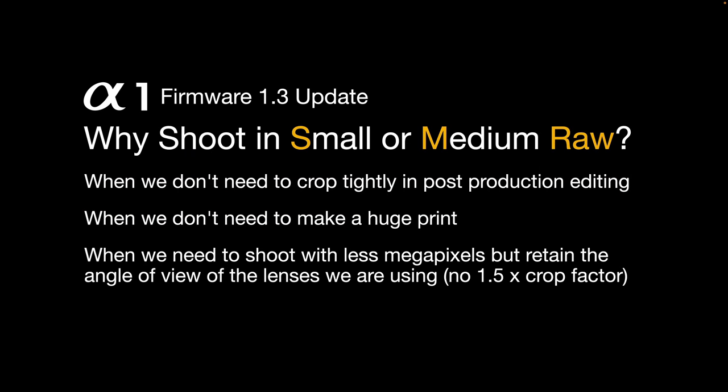Why shoot in small or medium RAW? A lot of people will ask what's the point of shooting in a lower resolution when you've gone to the trouble of buying a high-resolution 50 megapixel camera. Well, there are a couple of reasons. When we don't need to crop tightly in post-production, when we're just creating images for screen viewing, and when we need to shoot with fewer megapixels but retain the angle of view of the lenses we're using — we could previously drop the megapixel count by shooting in APS-C mode, but that gives us a 1.5x crop factor and narrows the angle of view. Now we can shoot in these lossless compression small and medium formats and retain the angle of view of our lenses.